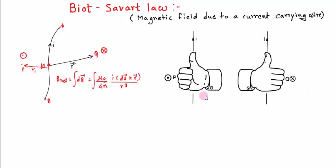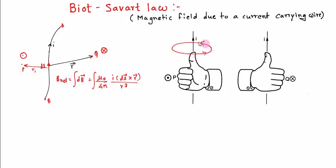The same can be explained by the right-hand thumb rule. For a current carrying wire, keep your right-hand thumb in the direction of current and if you curl your fingers, it gives the direction of magnetic field. At point P the fingers are coming out of the page, so the magnetic field is a dot. At point Q on the right-hand side, the fingers go into the page. So basically any current carrying wire creates a circular magnetic field around it, the direction of which is given by the right-hand thumb rule.